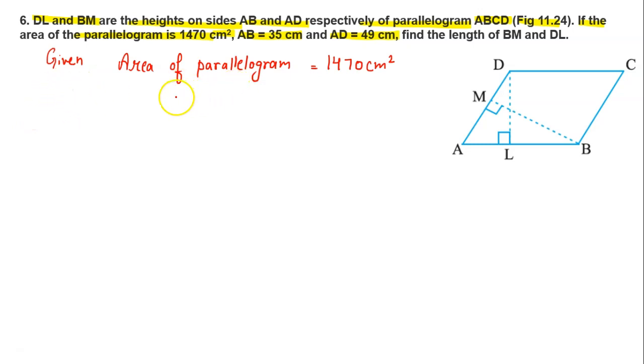Now what is the formula for area of parallelogram? Base into height equals 1470 cm². Now we have AB value given 35 cm and AD value given 49 cm. So base is AB times the height on that base.